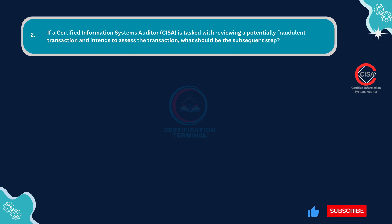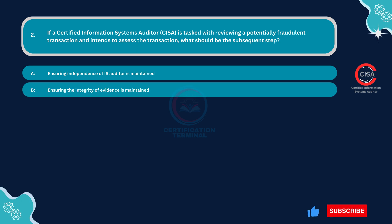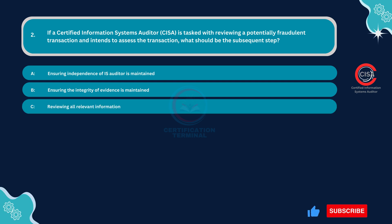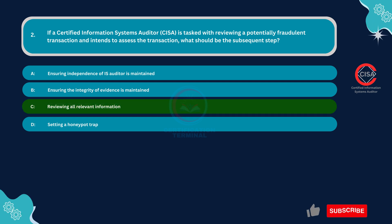Question 2: If a CISA is tasked with reviewing a potentially fraudulent transaction and intends to assess the transaction, what should be the subsequent step? Option A: Ensuring independence of IS auditor is maintained. Option B: Ensuring the integrity of evidence is maintained. Option C: Reviewing all relevant information. Option D: Setting a honeypot trap. The correct answer is Option C: Reviewing all relevant information.